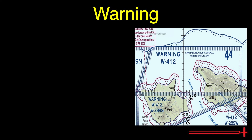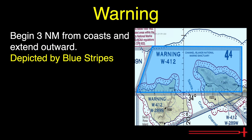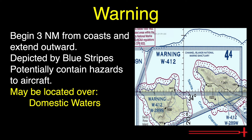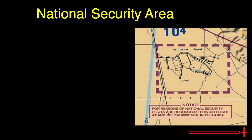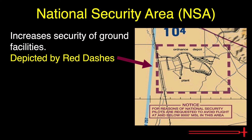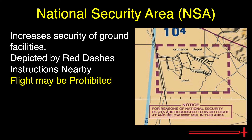A Warning Area includes airspace beginning from three nautical miles from the U.S. coast and extending outward from there. Warning areas are depicted by a blue striped pattern labeled with a 'W.' These areas potentially contain activity that may be hazardous to non-participating aircraft and may be located over domestic waters, international waters, or both. National Security Areas, or NSAs, are established at locations where there is a requirement for increased security and safety of ground facilities. These areas are depicted in thick red dashes. Instructions are listed nearby. Pilots are requested to avoid flying through any depicted NSA. When it is necessary to provide a greater level of security and safety, flight in NSAs may be temporarily prohibited. This information would be released as a NOTAM or Notice to Airmen.